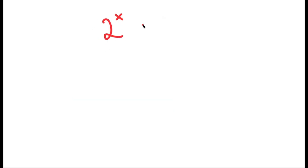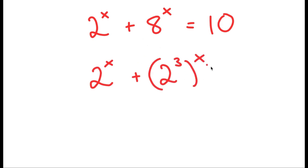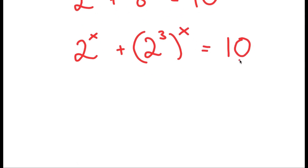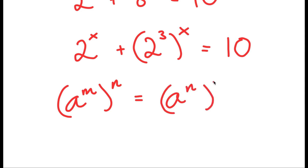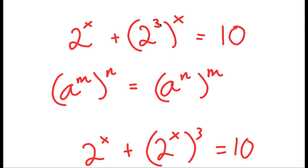In this video, I'm going to solve the equation 2 to the power of x plus 8 to the power of x is equal to 10. To solve this, I'm going to first start by rewriting 8 as 2 to the power of 3. So I get 2 to the power of x plus 2 to the power of 3 to the power of x is equal to 10. Using the exponent rule, I switched the places of 3 and x to get 2 to the power of x plus 2 to the power of x to the power of 3 equals 10.